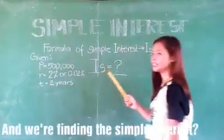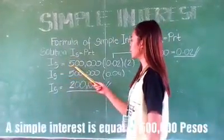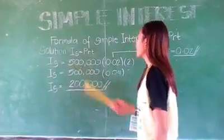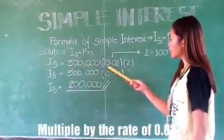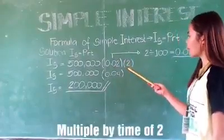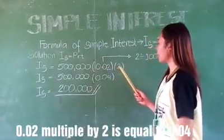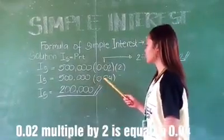And this is the solution. Simple interest is equal to 500,000 pesos multiplied by the rate of 0.02, multiplied by time of 2. 0.02 multiplied by 2 is equal to 0.04.